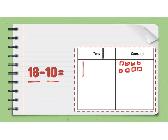And then if I subtract 10 I'm going to take away one of those tens. So I only have one 10. So I would take that one away and my answer would be 8 ones.